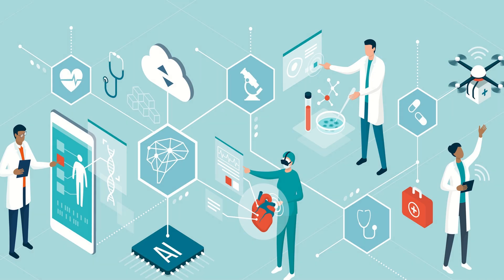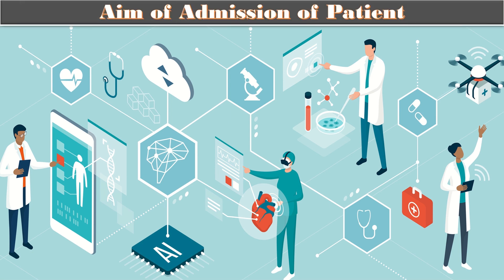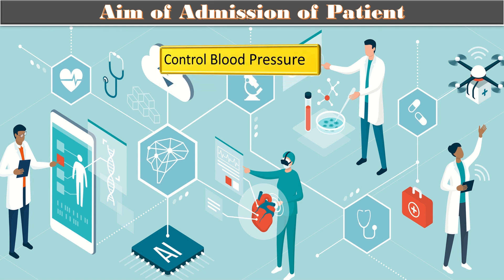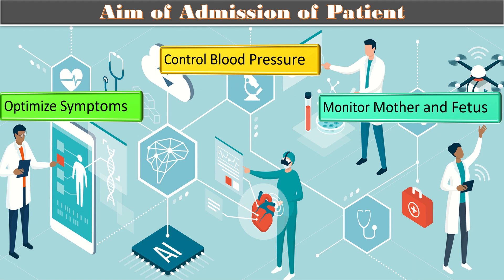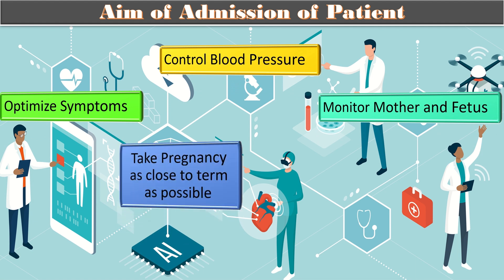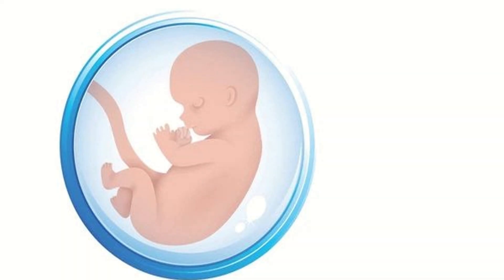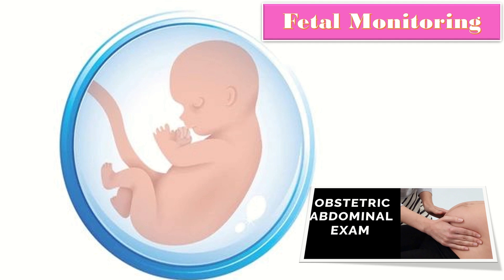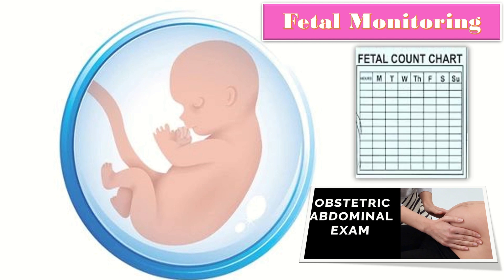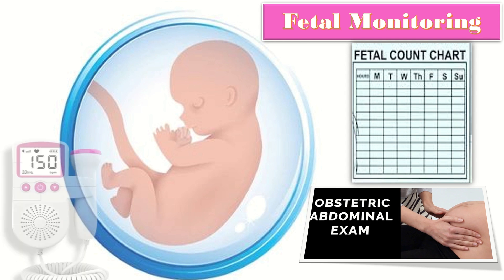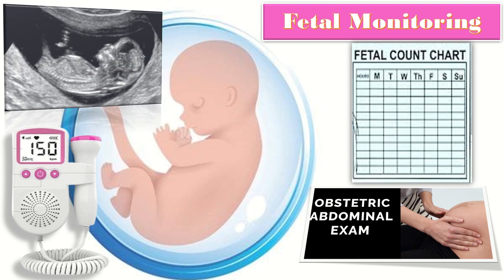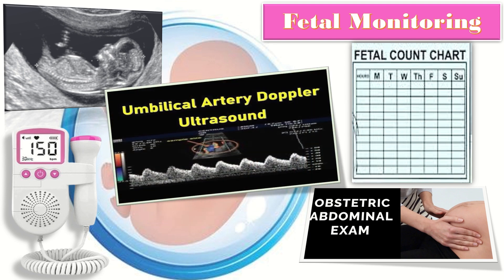The aims of admission are to control blood pressure, optimize symptoms, and monitor mother and fetus, taking the pregnancy as close to term as possible. Fetal monitoring includes obstetric abdominal examination for fetal lie, presentation, and liquor volume. Give the patient a fetal kick count chart on a daily basis, check fetal heart sounds, perform weekly obstetric ultrasound plus biophysical profile, and perform two- to three-weekly growth scan plus umbilical artery Doppler.